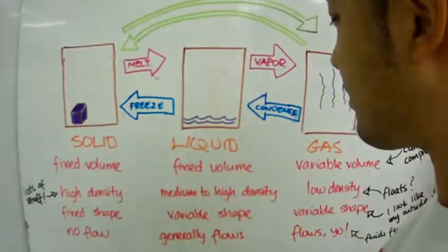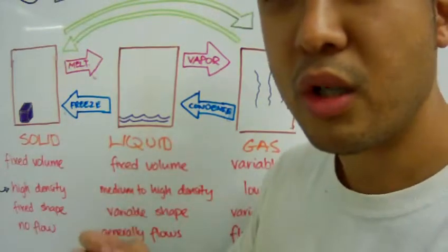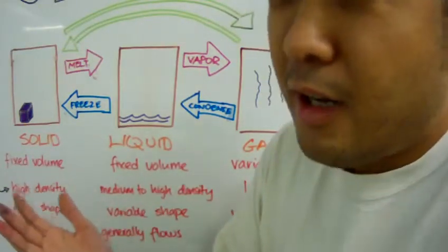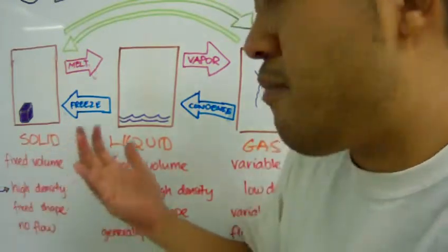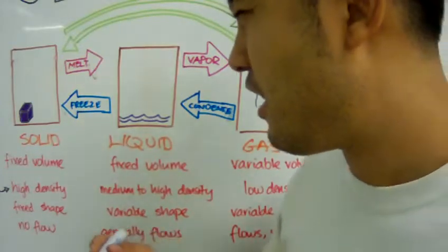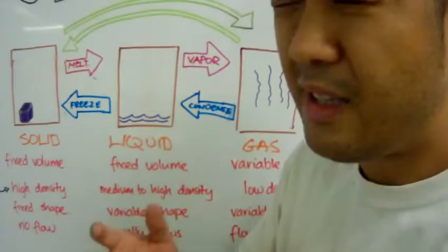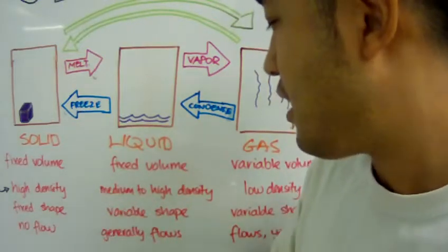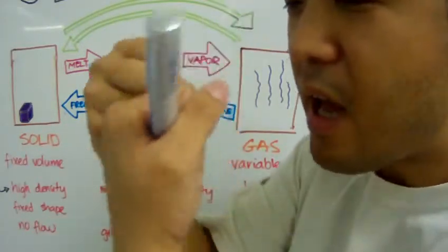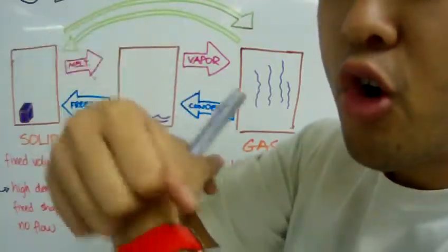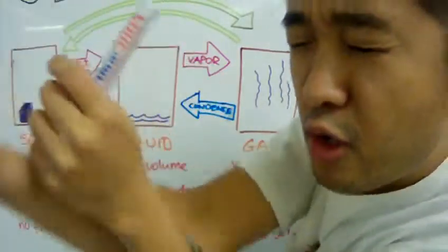Now, what about liquid? Liquid also has a fixed volume. Like one liter of water — we always have one liter of water, unless it changes state or you drink it. Also, liquid can have a medium to high density, depending on how it is, because the particles in the liquid are very close together, but they flow around and cross each other — like fluid dancing.